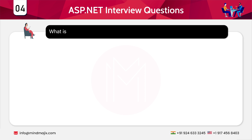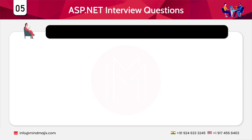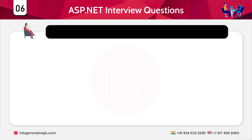The next question is: what is the extension of ASP.NET pages? The extension for ASP.NET pages is .aspx. The next question is: what is IIS? IIS stands for Internet Information Server, and it was developed by Microsoft with its own operating system. The purpose of IIS is to execute the web page scripts.